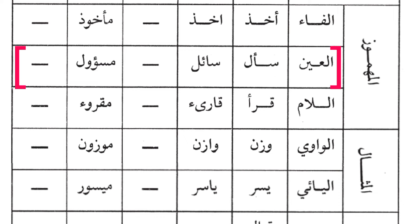The second type of al-mahmuz is the one which has a hamza as its second letter, the 'ayn al-kalima'. An example is the word 'sa'ala' — he asked, he questioned. So the questioner will be 'sa'ilun'. Allah says: 'sa'ala sa'ilun bi'adhaabin waqi' — the questioner asked about the forthcoming sure punishment. And 'mas'ulun' means the one being questioned.